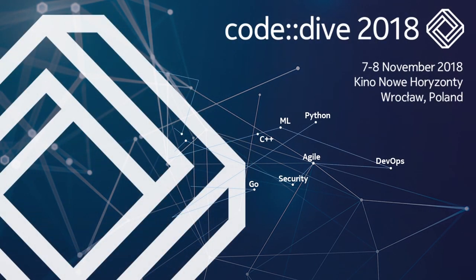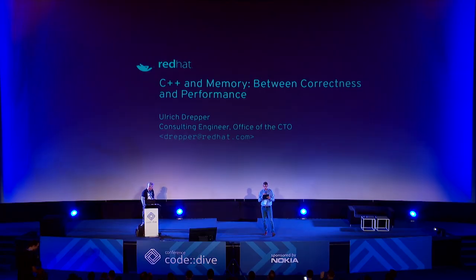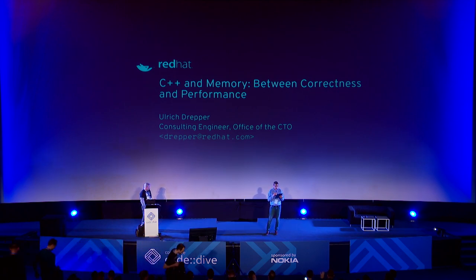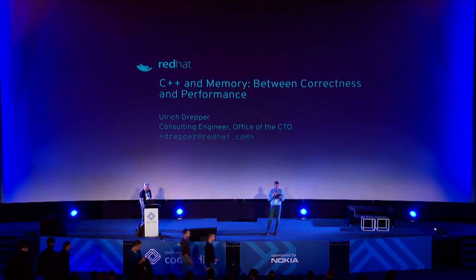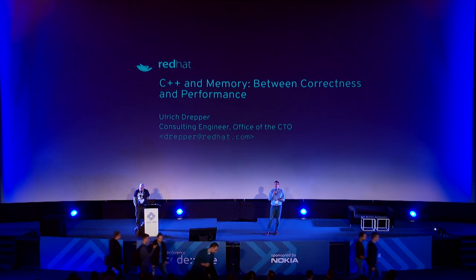I'd like to introduce our next speaker, Ulrich Drepper, another returning speaker. Ulrich rejoined Red Hat in 2017 after a seven-year hiatus. He is a member of the Office of the Chief Technology Officer there. In that capacity, he's looking at upcoming technologies for products and internal application. His focus is mostly on machine learning, low-level, and high-performance computing, as well as alternative computer architectures.